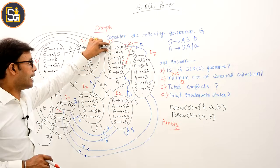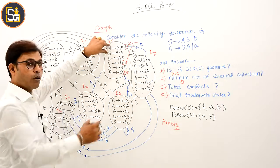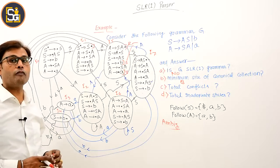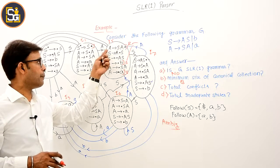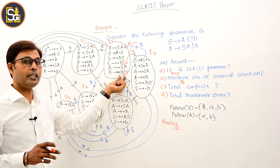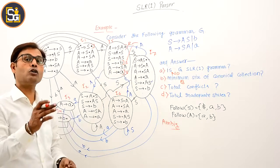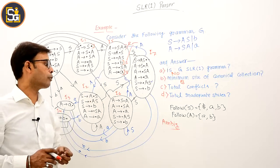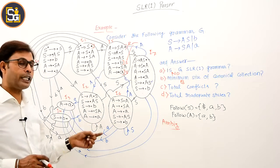Keeping the same reduce entry, if the shift entry is for A — and FOLLOW(A) contains A — then that is also a shift-reduce conflict. So from state I5 we get two shift-reduce conflicts.